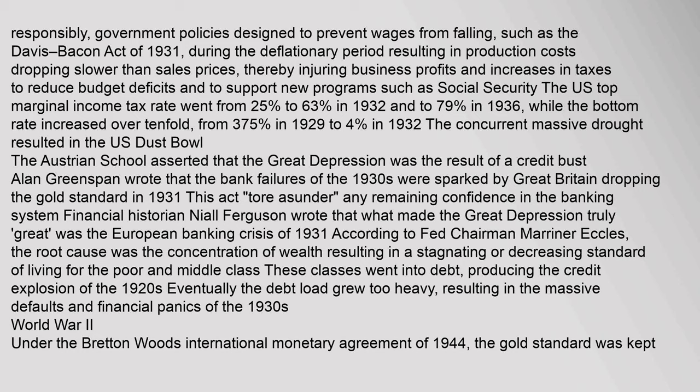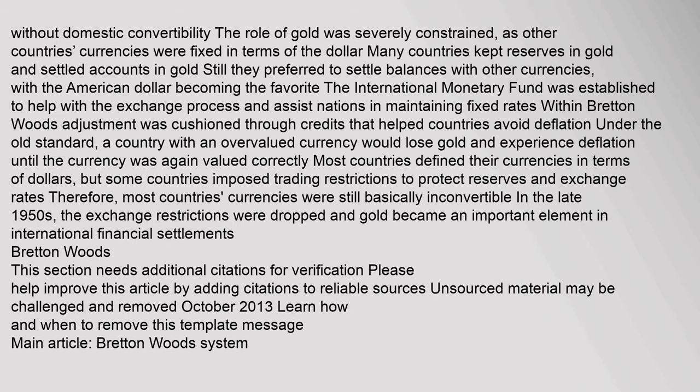Under the Bretton Woods International Monetary Agreement of 1944, the gold standard was kept without domestic convertibility. The role of gold was severely constrained as other countries' currencies were fixed in terms of the dollar. Many countries kept reserves in gold and settled accounts in gold, but preferred to settle balances with other currencies, with the American dollar becoming the favorite. The International Monetary Fund was established to help with the exchange process and assist nations in maintaining fixed rates. Within Bretton Woods, adjustment was cushioned through credits that helped countries avoid deflation. Most countries defined their currencies in terms of dollars, but some imposed trading restrictions to protect reserves and exchange rates.